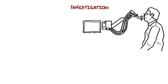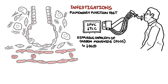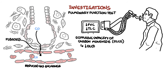Investigations to order include a pulmonary function test, which will show a reduced vital capacity and reduced total lung capacity. The diffusing capacity of the lung for carbon monoxide (DLCO) often shows a reduced amount. However, results may be normal early in the disease. The reduced DLCO is a result of fibrosis in the interstitium, so carbon monoxide does not enter circulation properly — there is reduced gas exchange.